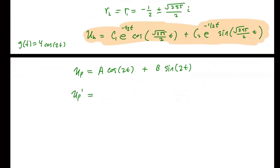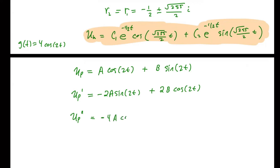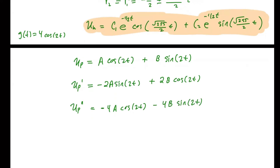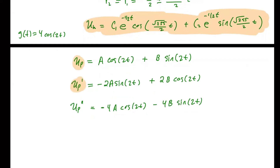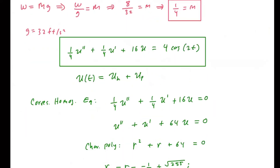Now we compute the derivatives. u sub p prime, using the chain rule, is negative 2A sine of 2t plus 2B cosine of 2t. Taking the second derivative, u sub p double prime is negative 4A cosine of 2t minus 4B sine of 2t. We'll now take u sub p, u sub p prime, and u sub p double prime and plug them back into the original differential equation.